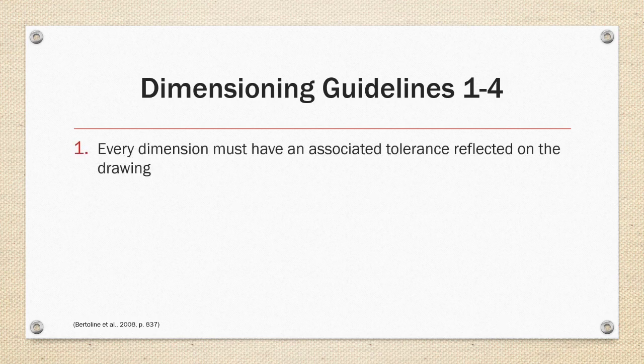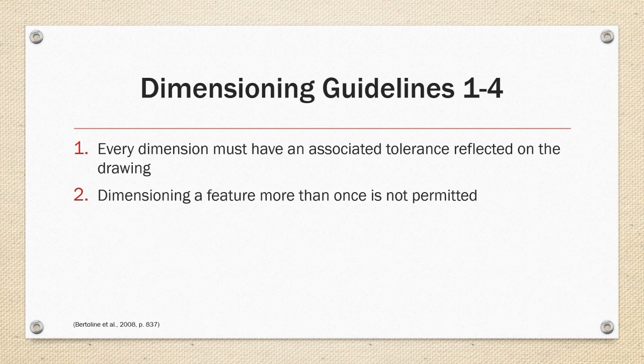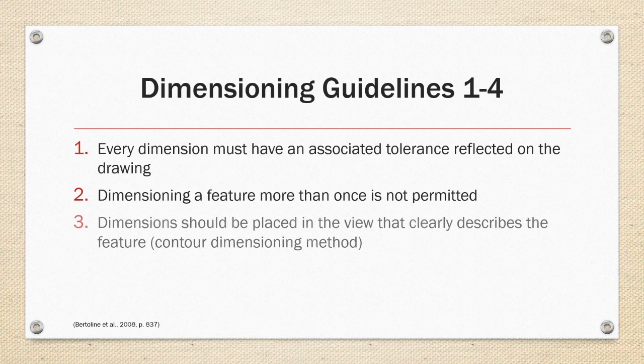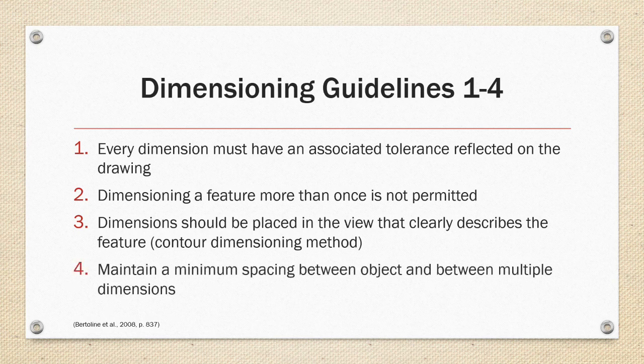One. Every dimension must have an associated tolerance reflected on the drawing. Two. Dimensioning a feature more than once is not permitted. Three. Dimension should be placed in the view that clearly describes the feature. This is also considered the contour dimension method. And four. Maintain a minimum spacing between object and between multiple dimensions.